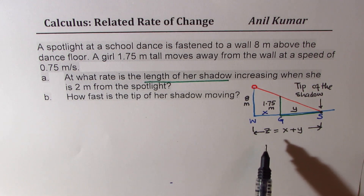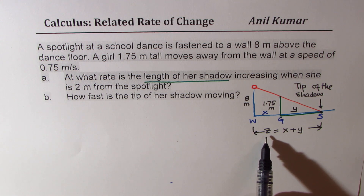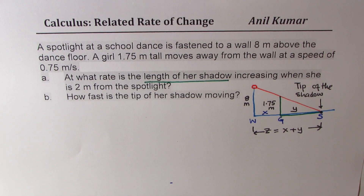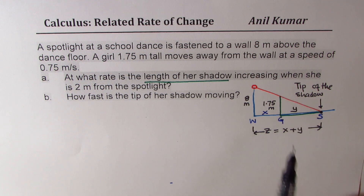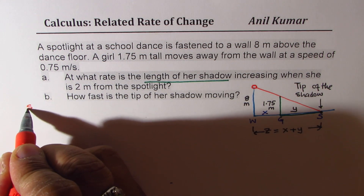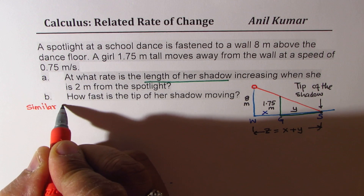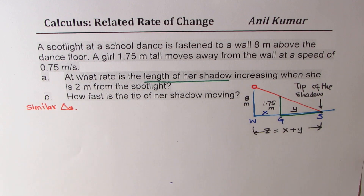In part B we want to find the rate of change of z with reference to time. I hope the question is now absolutely clear. Whenever you have this kind of situation, the best thing is to go for similar triangles — we get our equation from similar triangles.